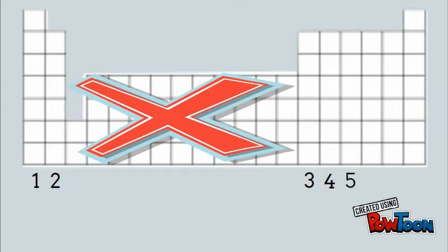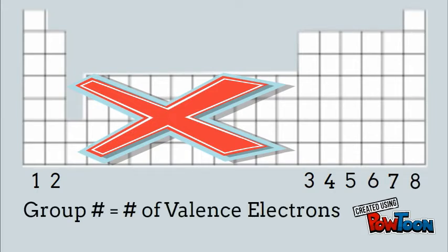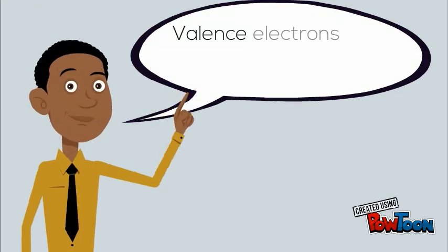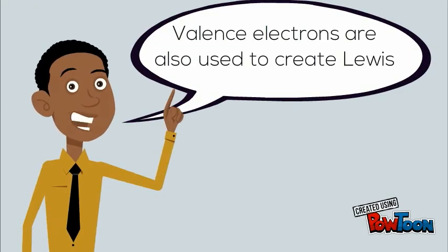Group three has three. Group four has four. Group five has five, and so on and so forth. So the group number is going to equal the number of valence electrons.